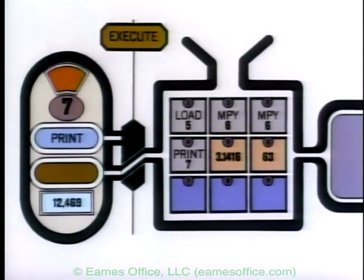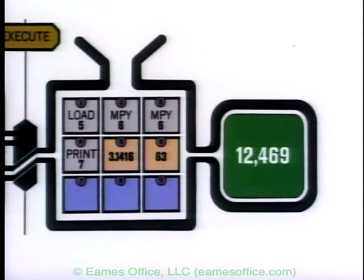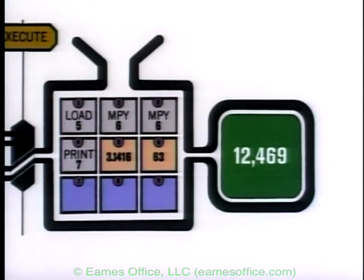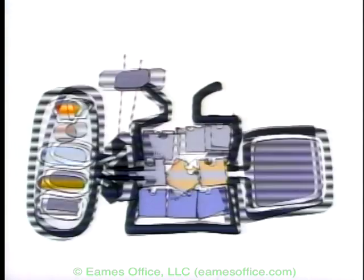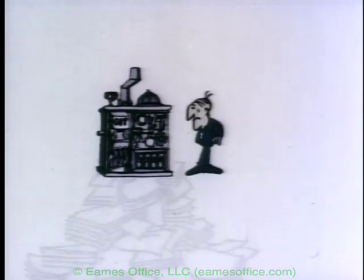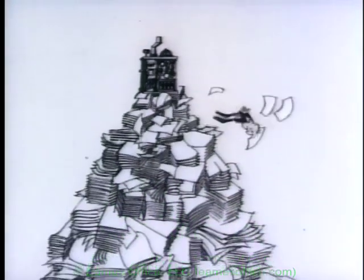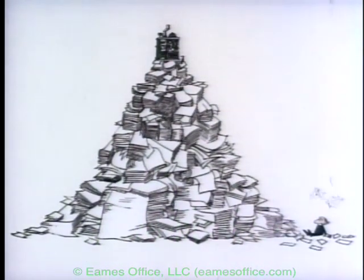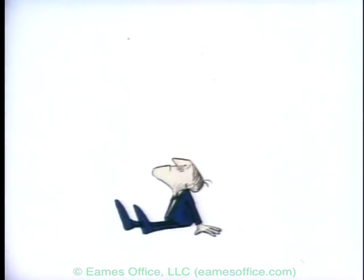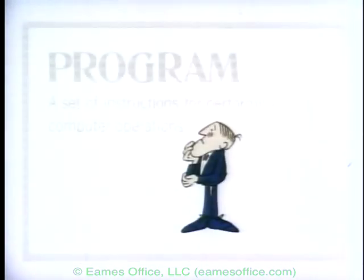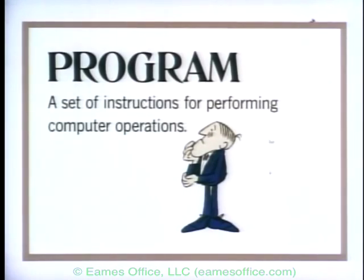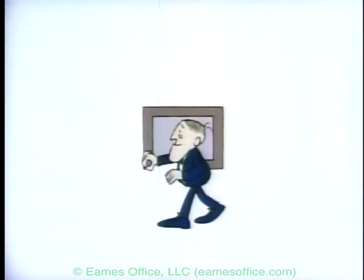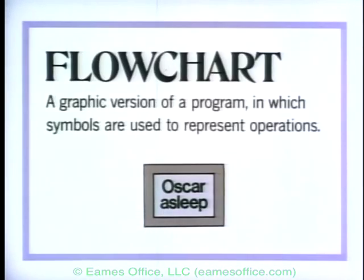The devices themselves — the electronics and mechanics — are referred to as hardware. But the directions that make the hardware perform operations are known as software: a computer's programs plus the procedures for their use. When designing a program, a set of instructions for performing computer operations, a programmer usually makes a flowchart.